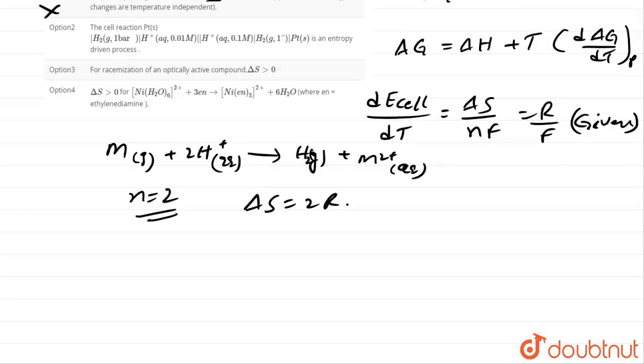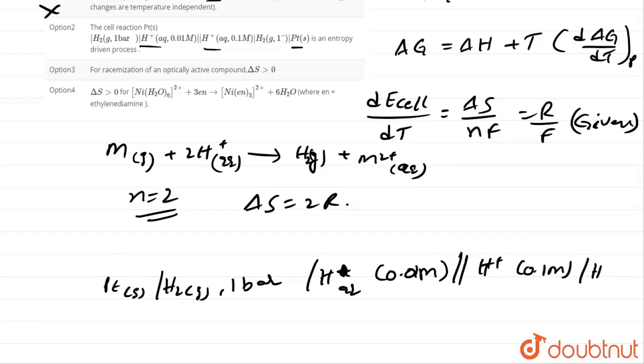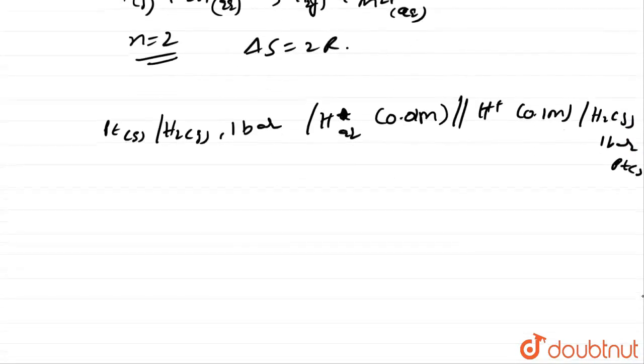They given that platinum electrode and hydrogen electrode. We will write the cell equation according to platinum is a solid and H2 is a gaseous atom at one bar pressure and H plus ion is aqueous and its concentration is 0.01 molar as they given. And the cell forms in between H plus which concentration is 0.1 molar and H2 gas which pressure is at 1 bar. For this we will calculate the E naught value.